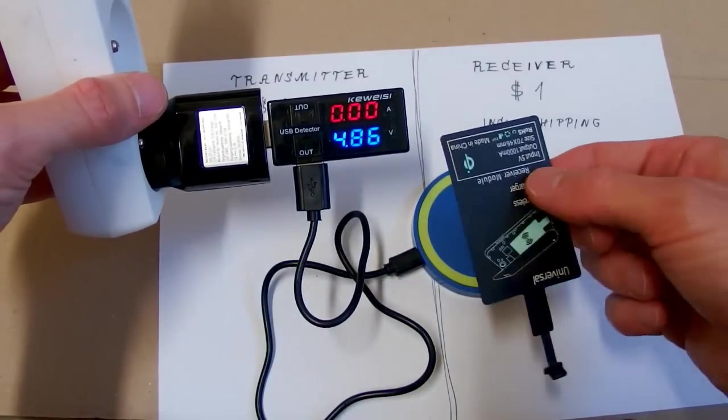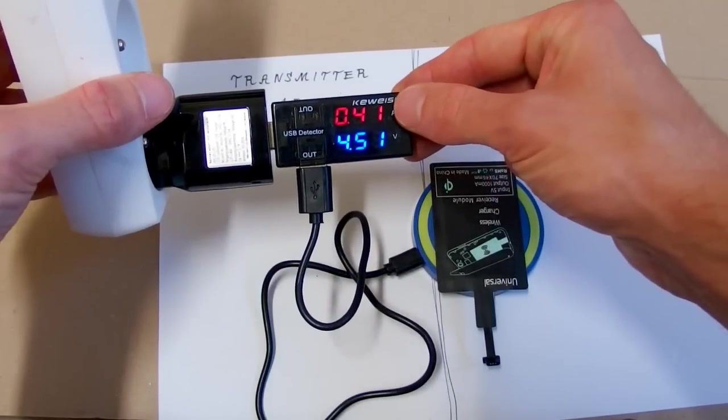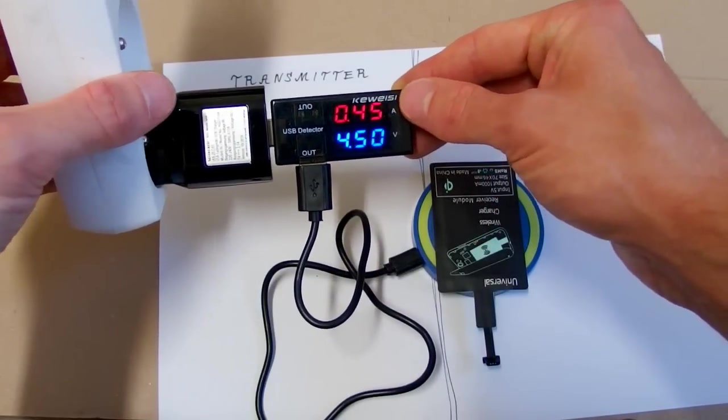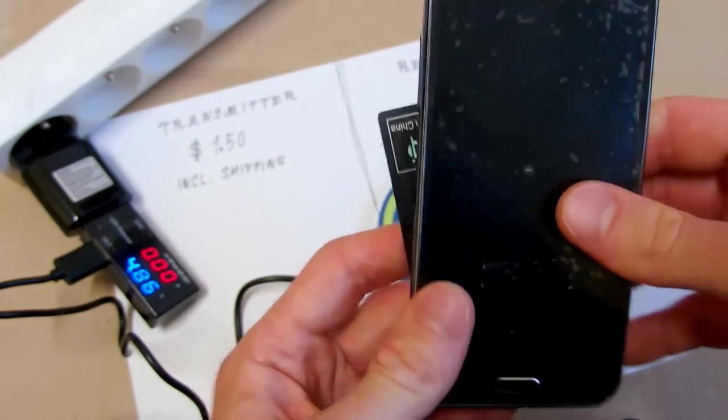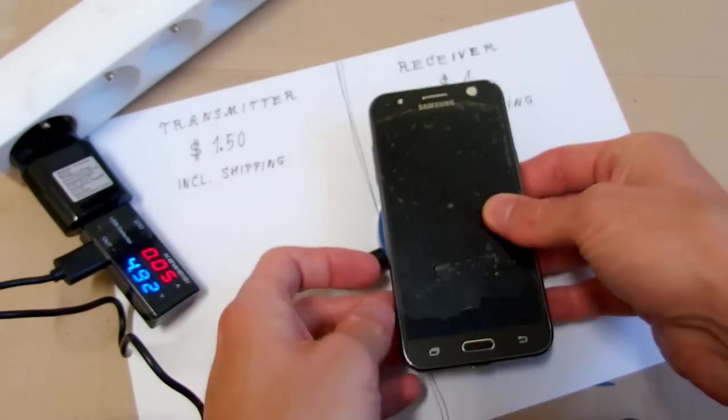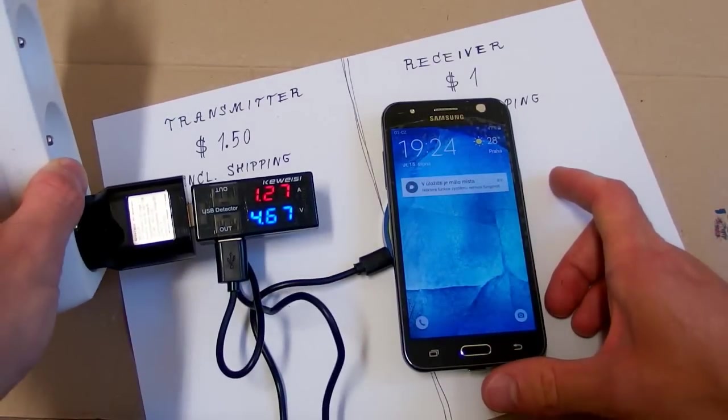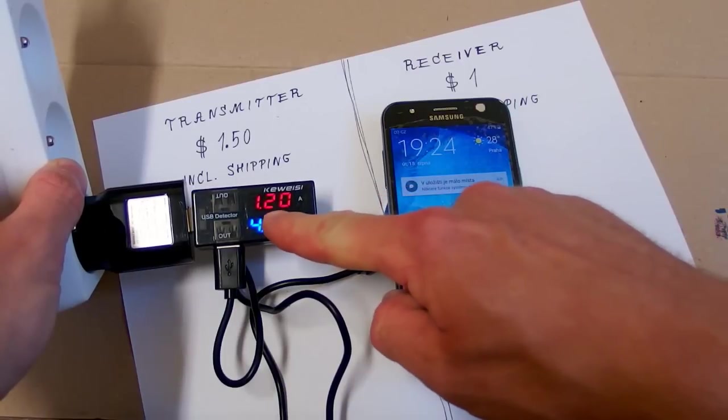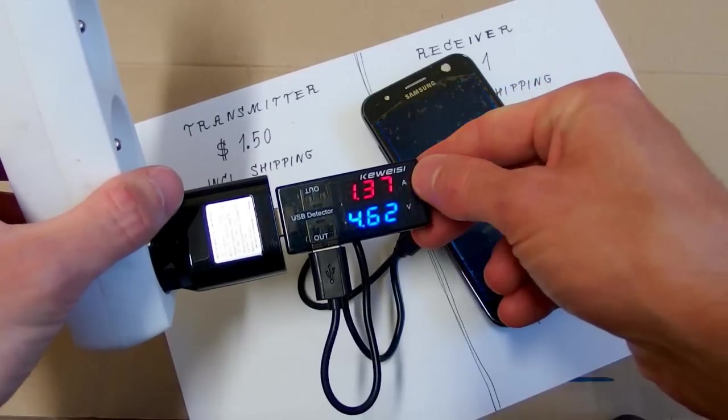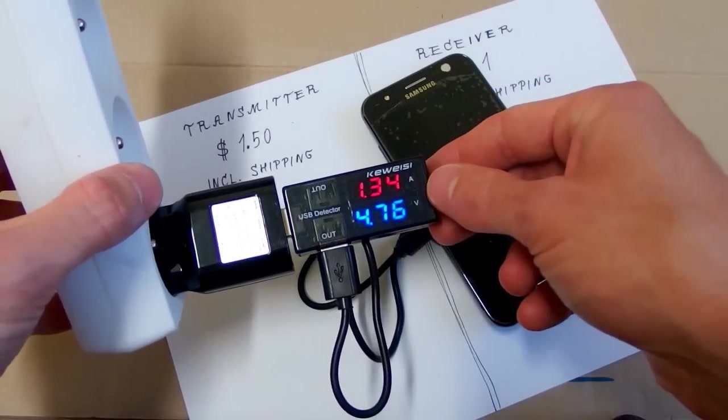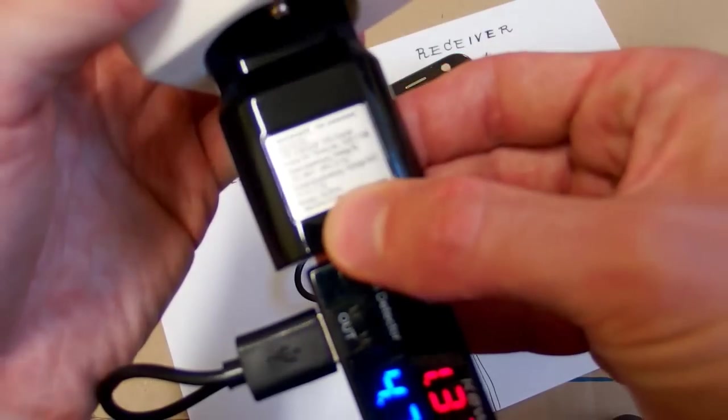When I put the receiver to it, it goes up to about 500 milliamps. So let's try to stick it into a phone. And now it draws, it actually charges and it draws about 1.2 amps. Now the current goes up to about 1.4 amps. That's quite a lot and you can't use a 1 amp charger. You have to use a 2 amp charger like this one.